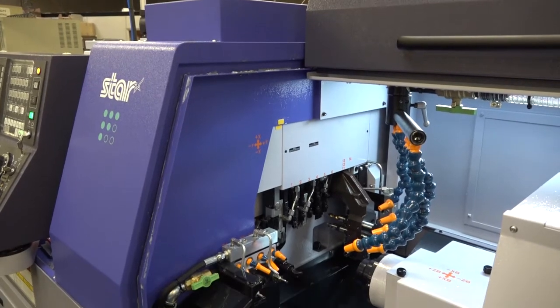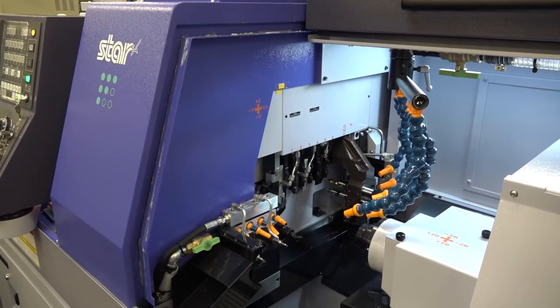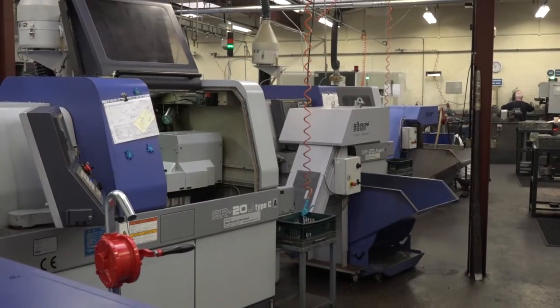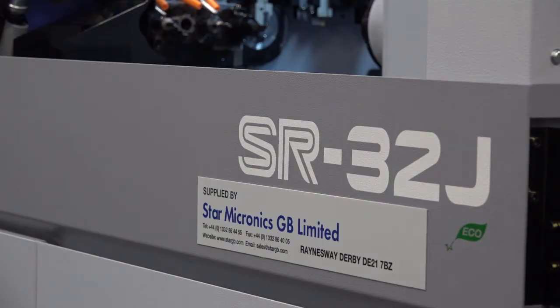Not your first machine from Star, is it? No, this is our fourth now. We initially started with two size 20 machines, and we've now bought two 32s. So the fourth one from Star now. Why the SR32J?